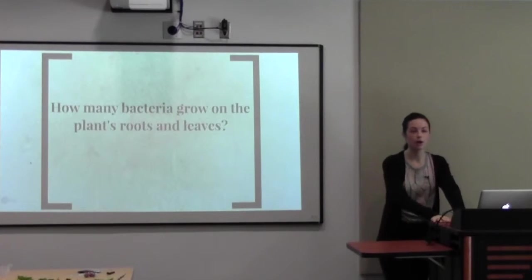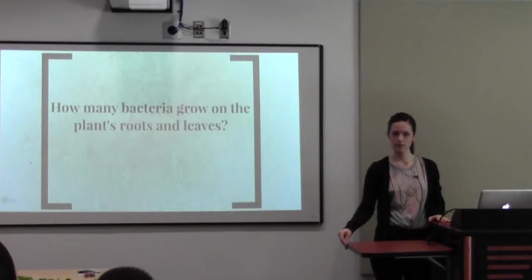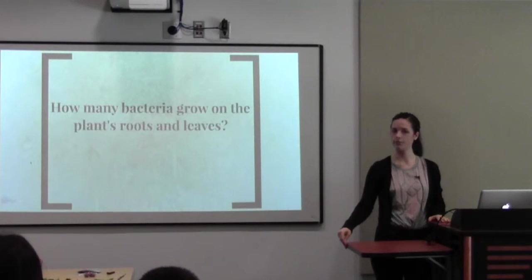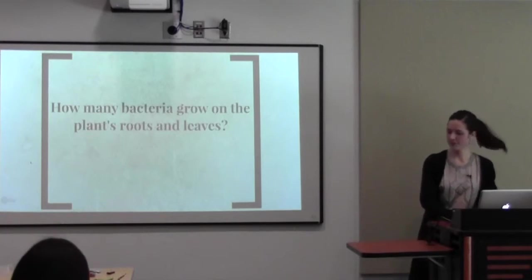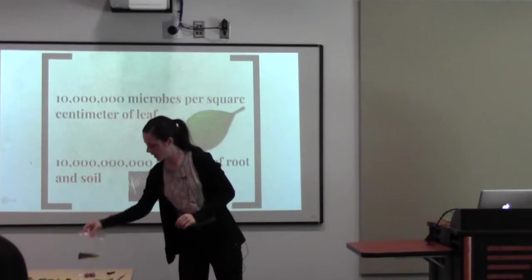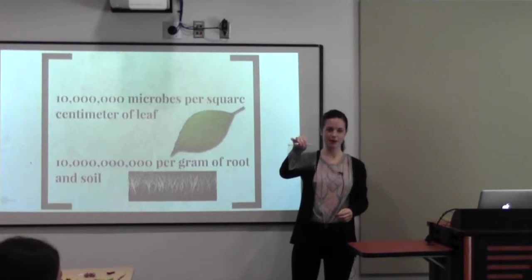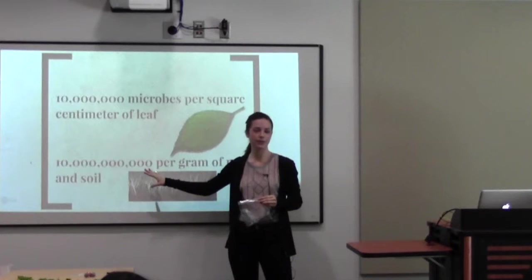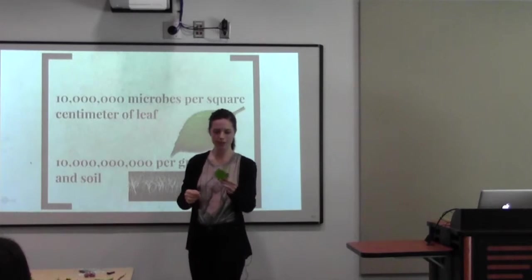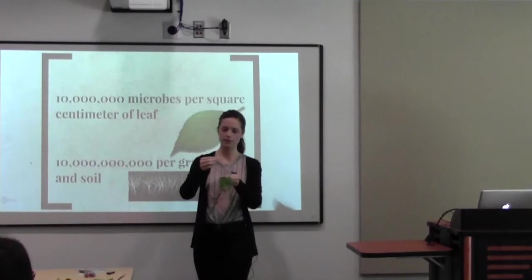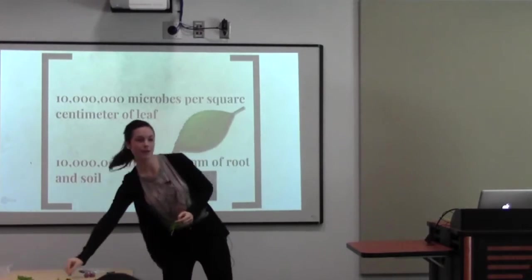So how many bacteria do you think grow on the roots and the leaves? A lot. What if I told you that this bag of soil had about a hundred billion bacteria in it? This is about 10 grams and every gram of soil and roots you get about 10 billion bacteria. There's a little bit less in leaves but not that much. This leaf is pretty large but if I pull off a little chunk that's about one centimeter squared, there should be around 10 million bacteria on this.